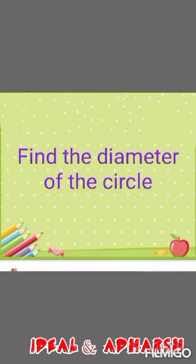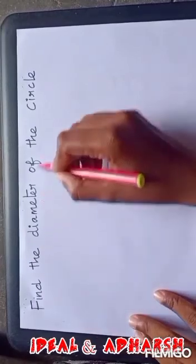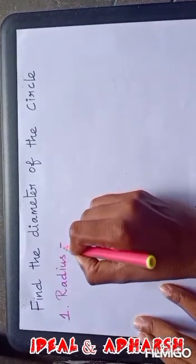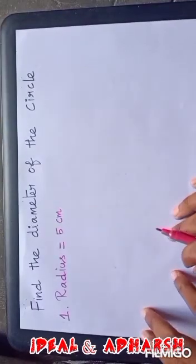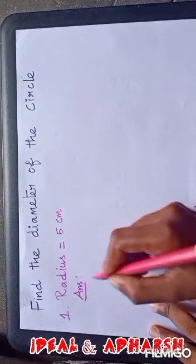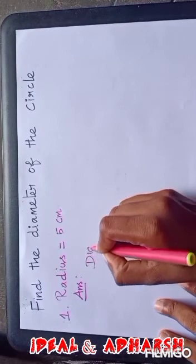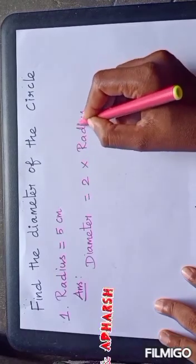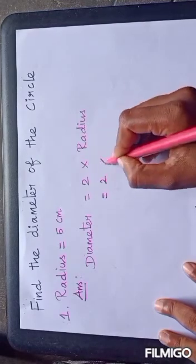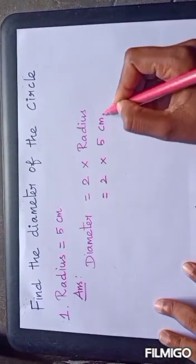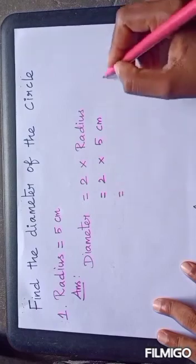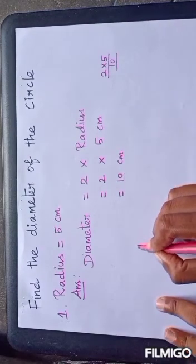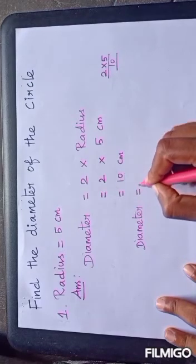Find the diameter of the circle. The radius is given, that is 5 cm. First of all we want to write the formula: diameter is equal to 2 times radius. Then substitute: 2 into 5. 2 fives are 10. Therefore the answer is 10 cm.